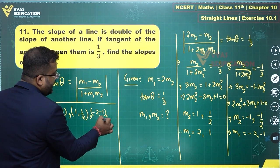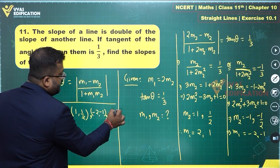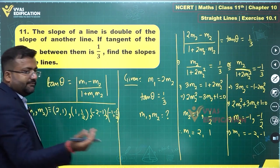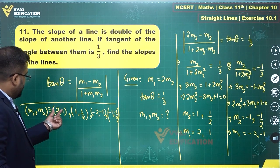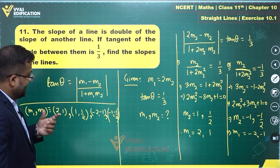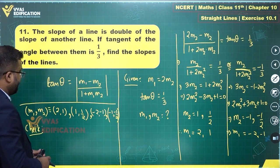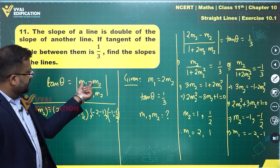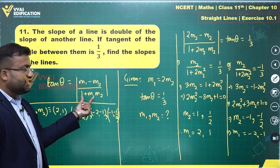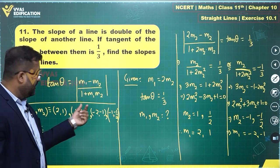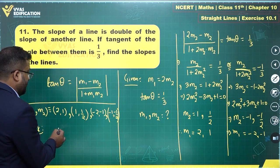This is minus 2, minus 1. And then you have minus 1, minus 1 by 2. Let's check for 2, 1. For 2, 1 this becomes 2 minus 1 which is 1 upon 1 plus 2, 1 upon 3. That seems okay. 1 upon 3, that's tan theta. This seems okay.